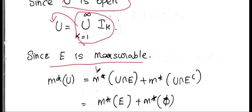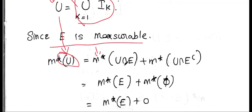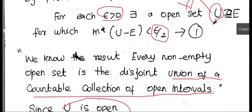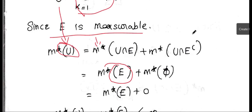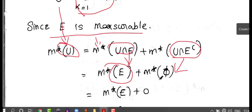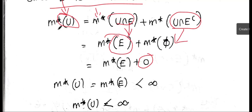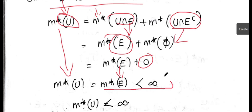Since E is measurable, by the definition of measurable set, M*(U) equals M*(U ∩ E) plus M*(U ∩ E complement). Since U contains E, U ∩ E equals E. So M*(U) equals M*(E) plus M*(U ∩ E complement). Since M*(E) is finite, M*(U) is also finite outer measure, and M*(U) equals M*(E).